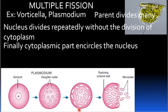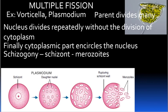Finally, each cytoplasmic part encircles the nucleus. The cytoplasm surrounds each nucleus. This is how the daughter cells are formed in multiple fission.